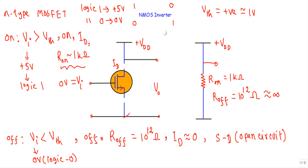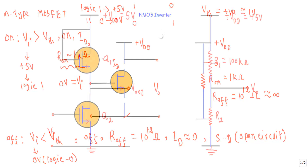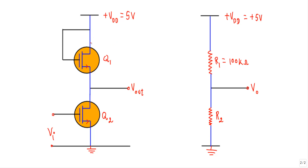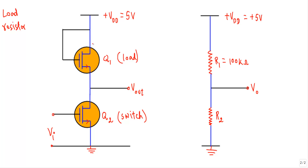Now I will show you the construction and logical operation of the NMOS inverter circuit. This is the structure of a basic NMOS inverter circuit. This circuit contains two N-channel MOSFETs, Q1 and Q2. The transistor Q1 will act as a load MOSFET, meaning it will act like a load resistor in the circuit. We design and connect Q1 so that it provides a desired resistance acting like a load resistor.